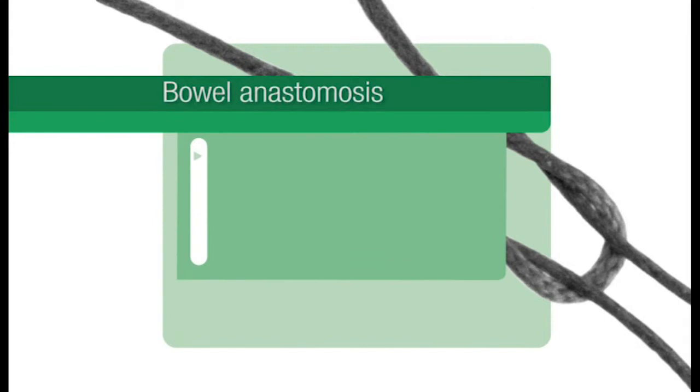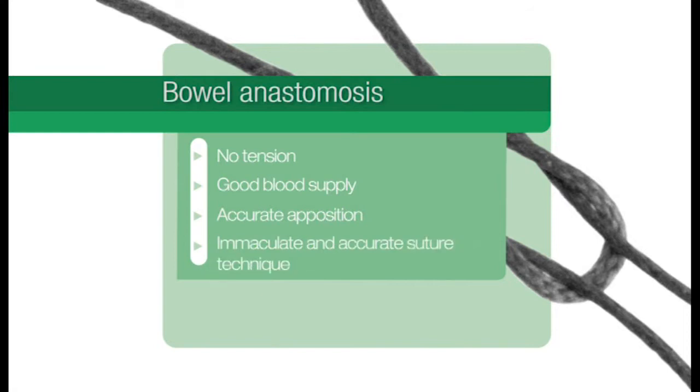There are several essentials for any bowel anastomosis. There must be no tension, a good blood supply to both ends of the bowel, and accurate apposition of the bowel ends with an immaculate and accurate suturing technique.